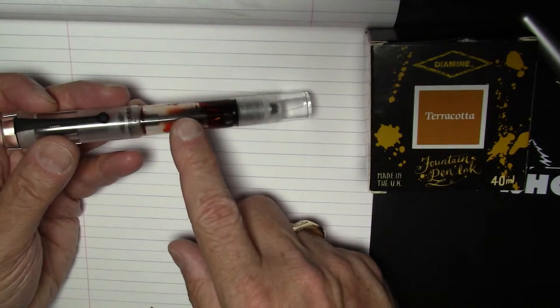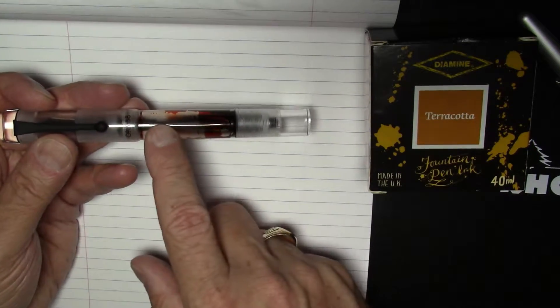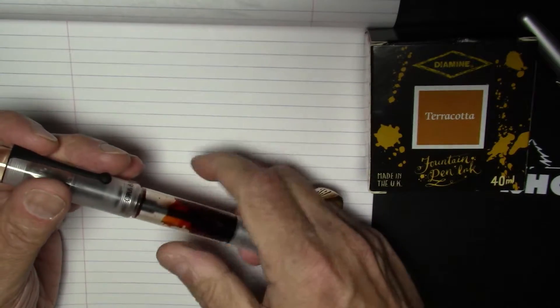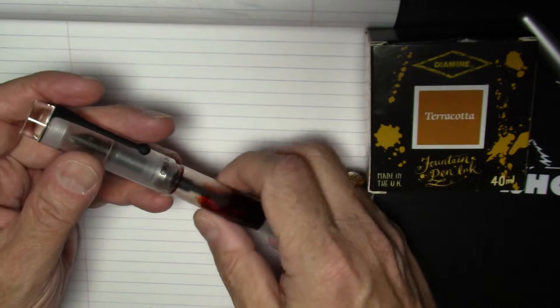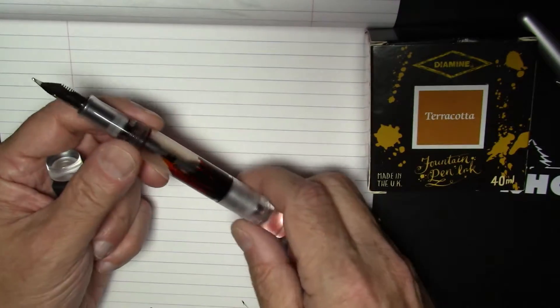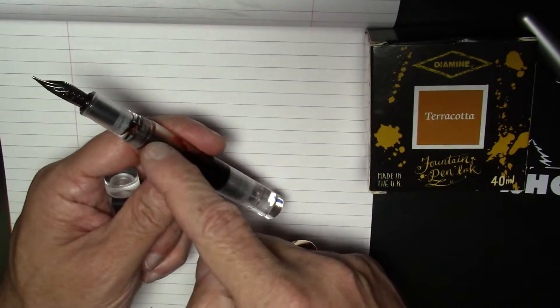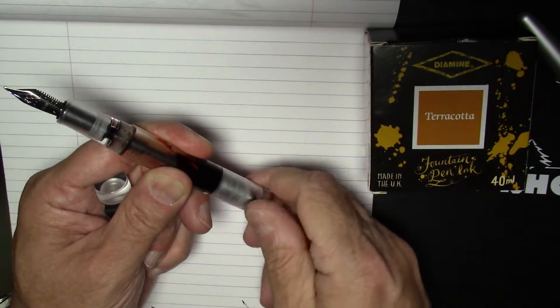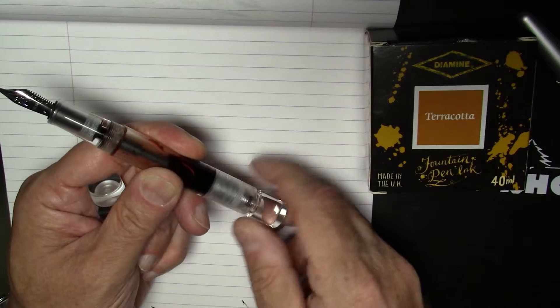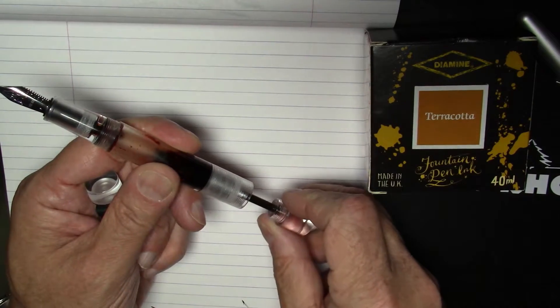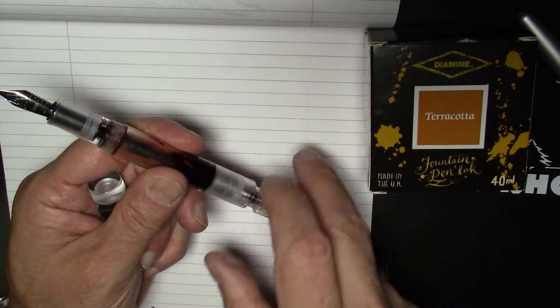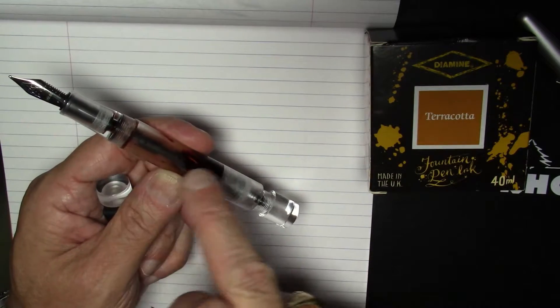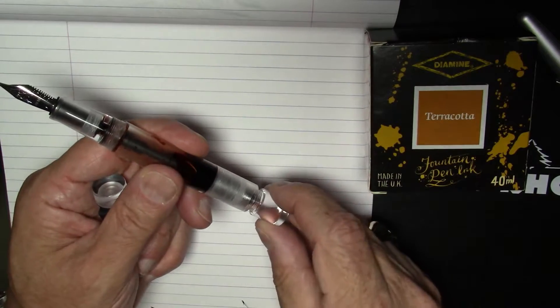This pen is an eyedropper filled pen. You see a rod in there, and at first glance you might think that's a vacuum filling mechanism or a piston filler, but it is not. It is a shut-off valve. You can operate the valve by turning this knob here, and there is a rod inside that can move back and forth. That basically connects and disconnects the ink supply in the section to the rest of the body.